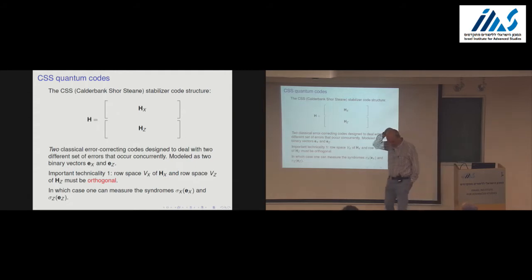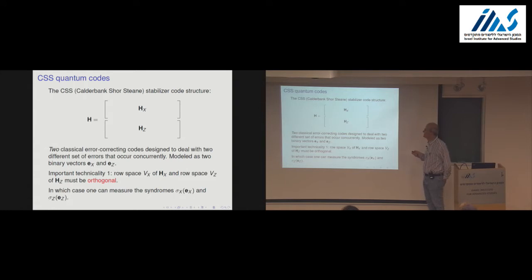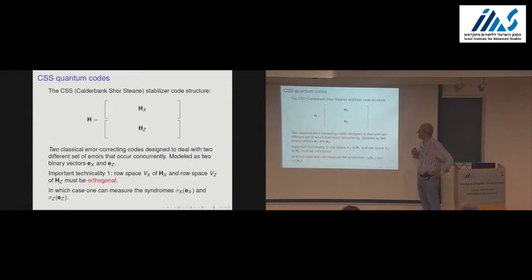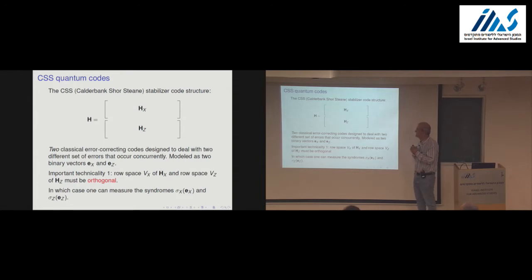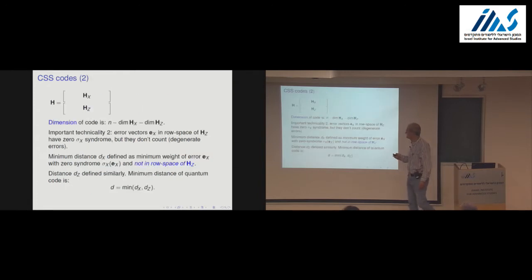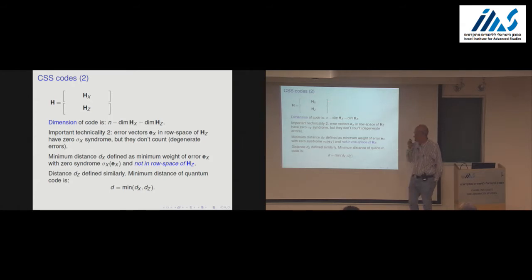That orthogonality has something to do with being able to measure syndromes in the quantum world. With this technicality, we're allowed to measure both sets of syndromes; never mind where the binary errors actually come from — they come from the quantum world, which I don't want to describe, or we won't be getting into the combinatorics. The dimension of the quantum code is whatever is left when you remove the dimensions of the row spaces of H_X and H_Z — very much like in the classical case.